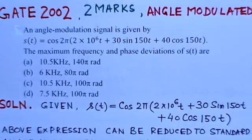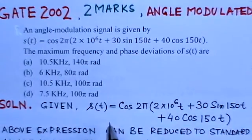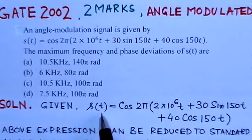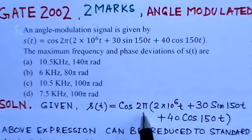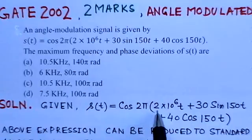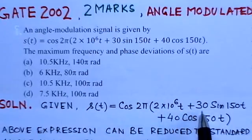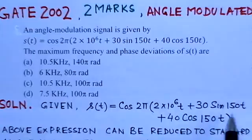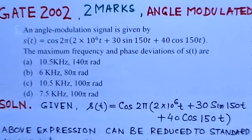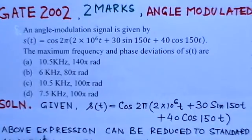What we find here is the signal s(t) is given: s(t) = cos 2π(2×10^6)t + 30 sin 150t + 40 cos 150t. So this is the expression given here.